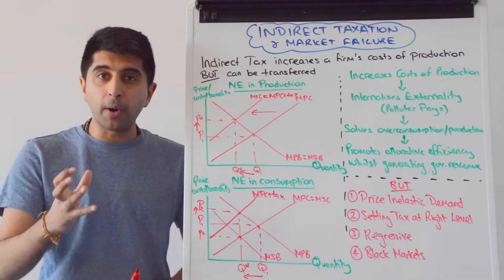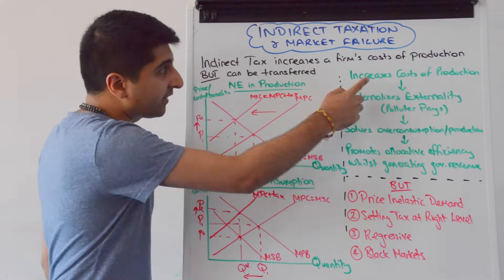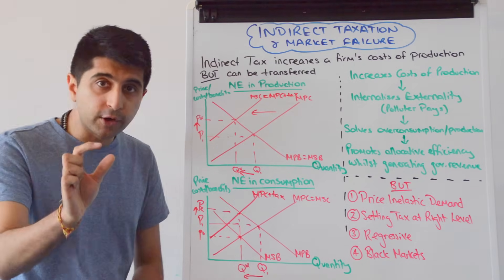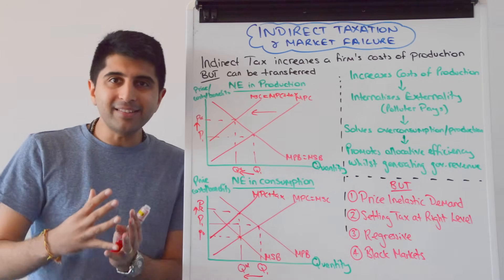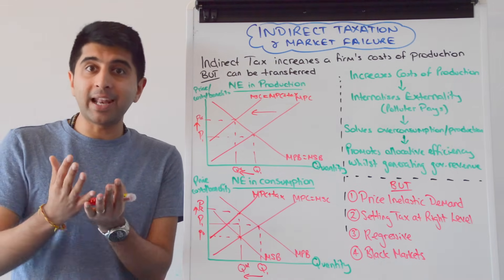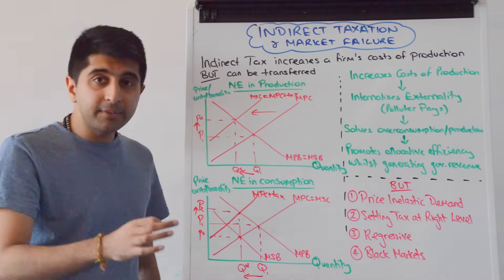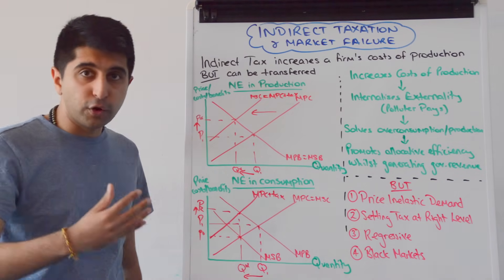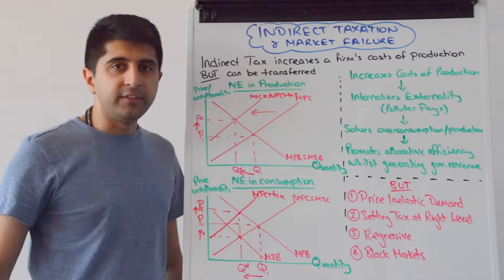That's how you would draw your market failure diagrams with an indirect tax to solve the failure. An indirect tax increases costs of production for firms — the MPC curve shifts. We see higher prices and lower quantities. By doing so, we internalize the externality. That's a very important phrase, because in the free market these negative externalities are completely ignored either by producers or consumers. But now, with higher prices imposed by the indirect tax, that externality is being accounted for in the price — it's being paid for. When it comes to negative externalities in production, we can say the polluter is now paying. We are at Q-star, allocative efficiency is promoted, and we see a welfare gain in the market.